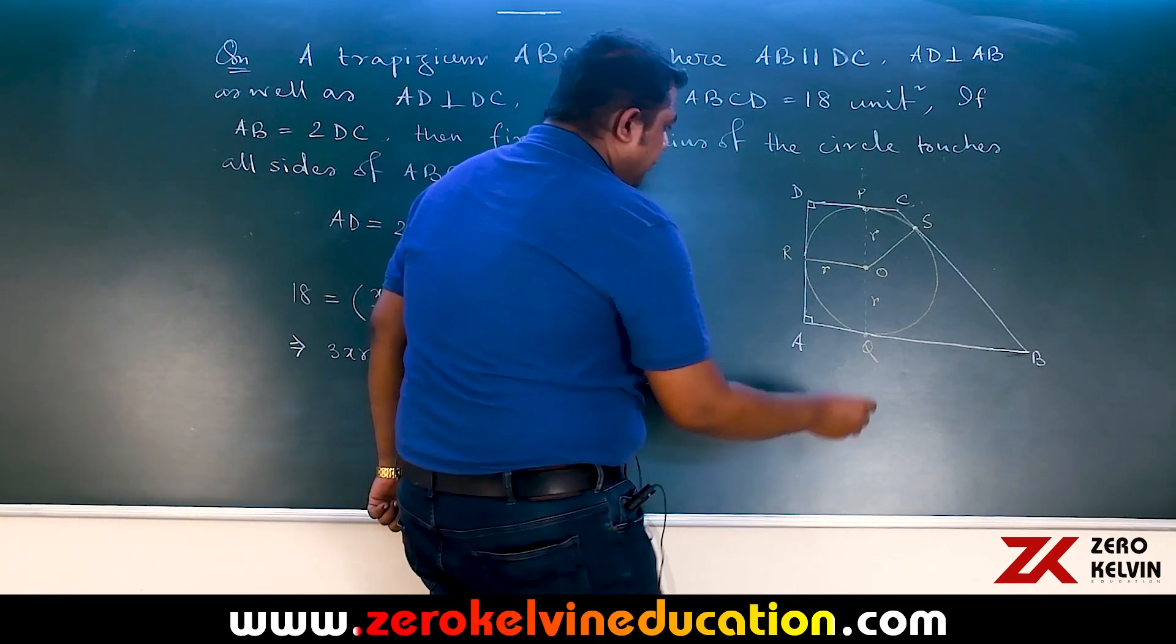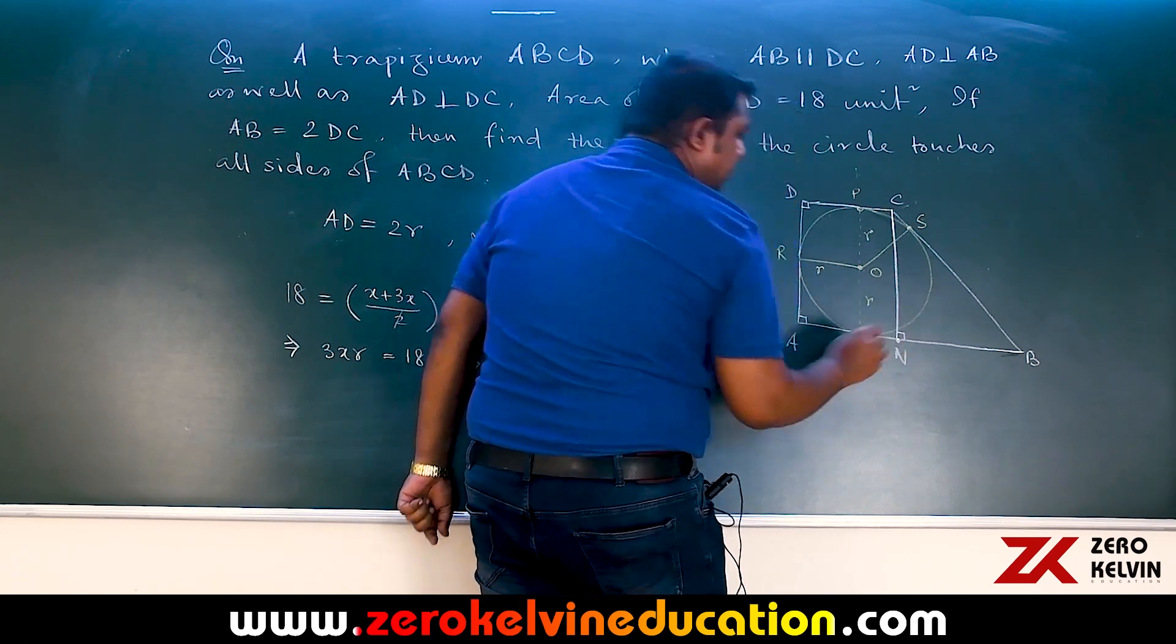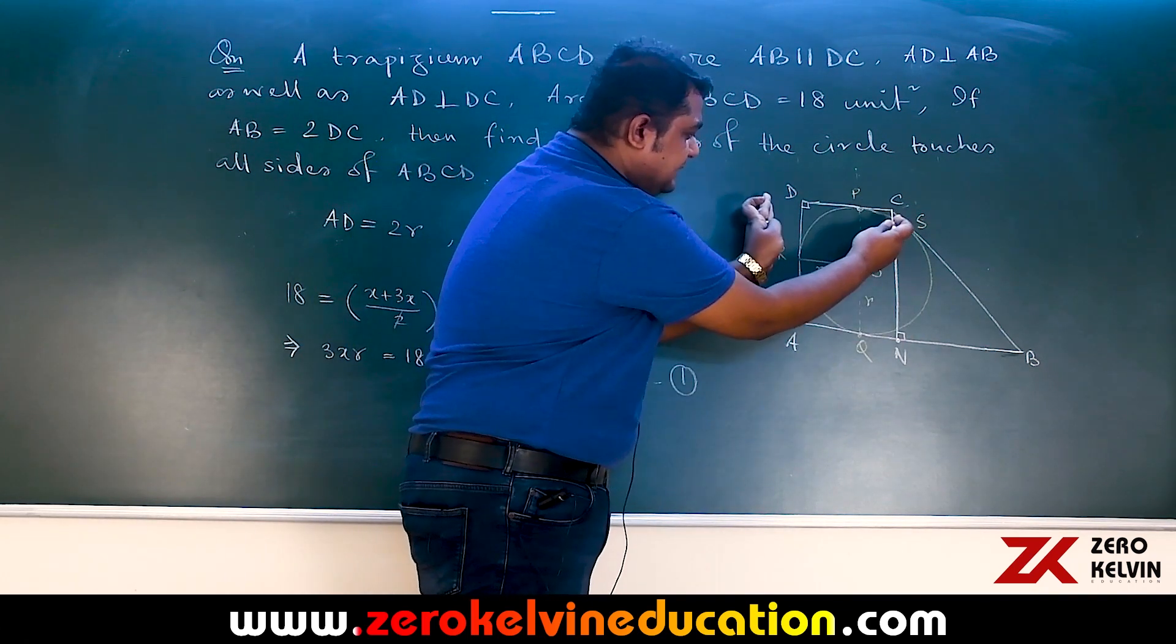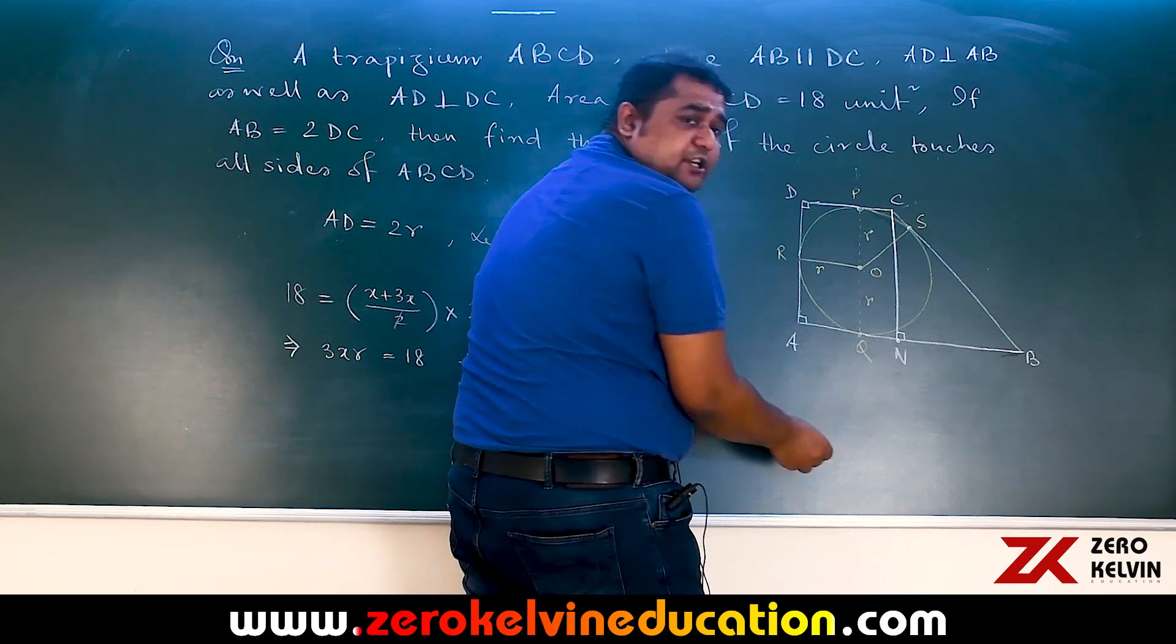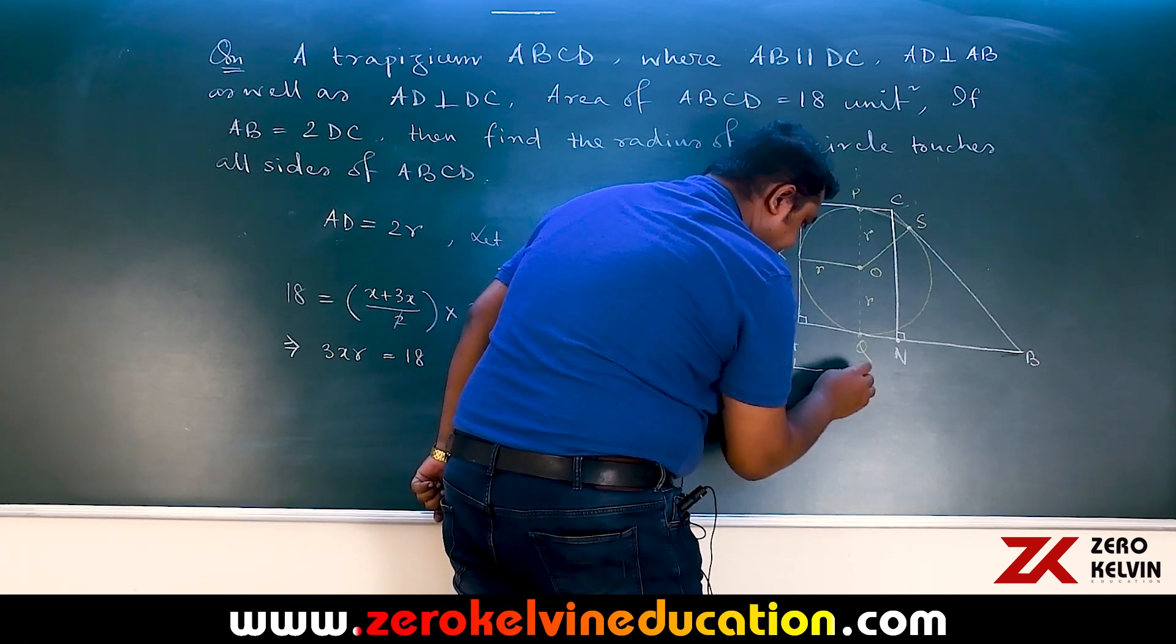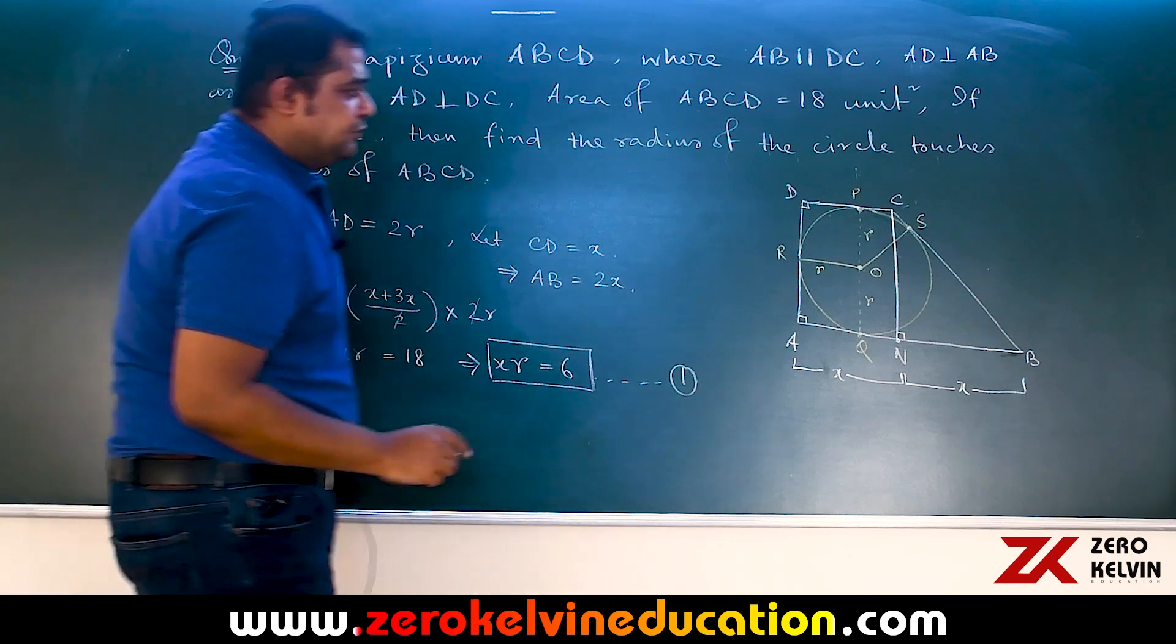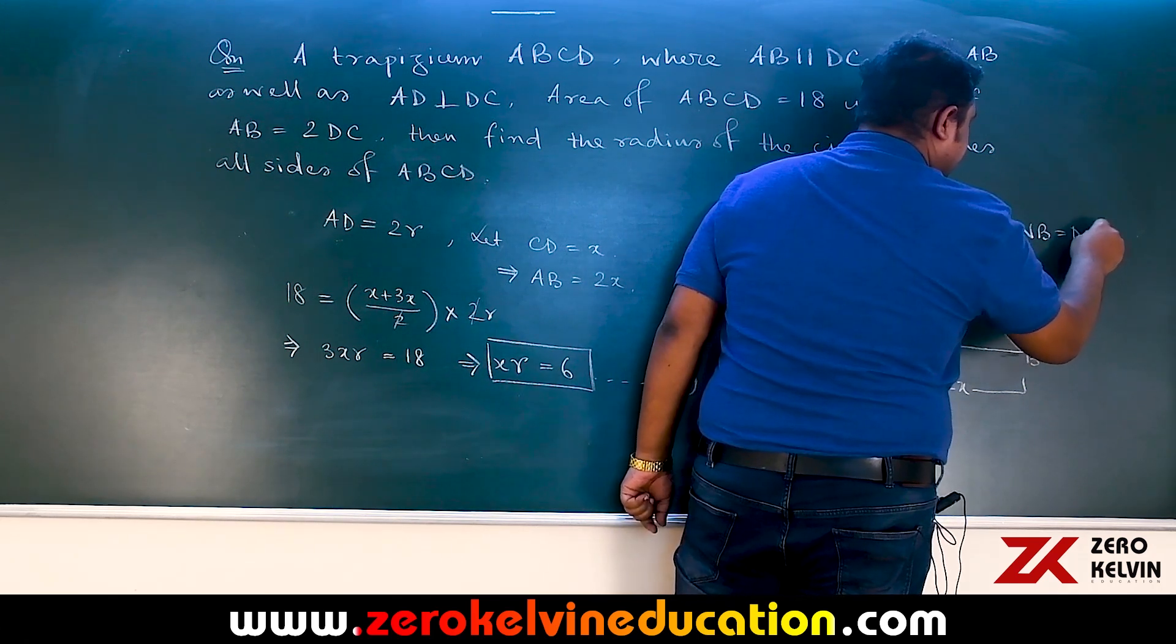Now we have drawn a perpendicular, say CN from C on the side AB. As AB was double of DC, due to dropping perpendicular from C, this DC and this AN are definitely equal and hence N can be identified as midpoint of AB. So we can mark this measurement as x as well as this part is also x. Due to dropping perpendicular we can mark AN equals NB equals DC which is x.